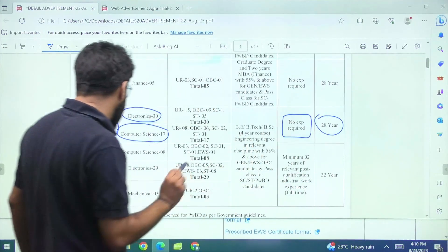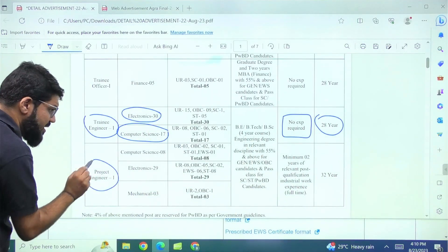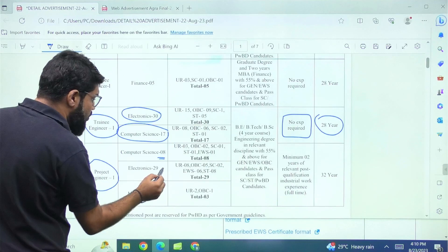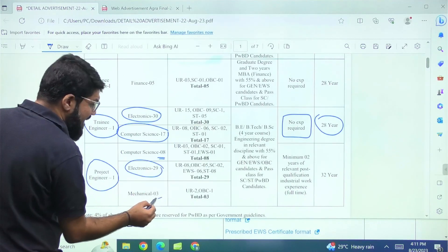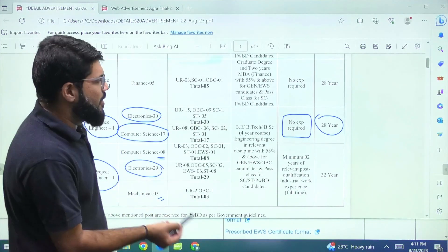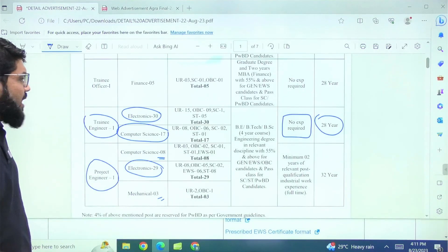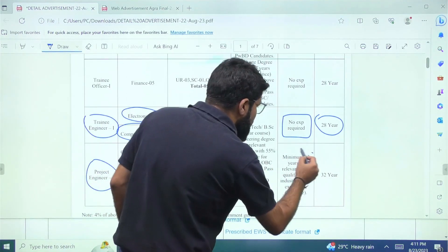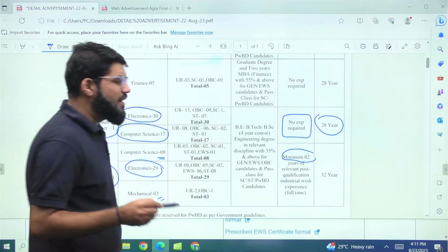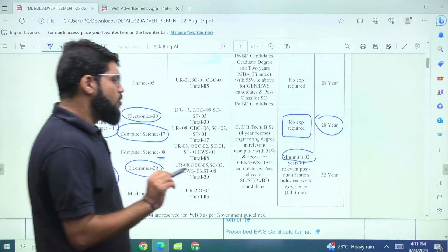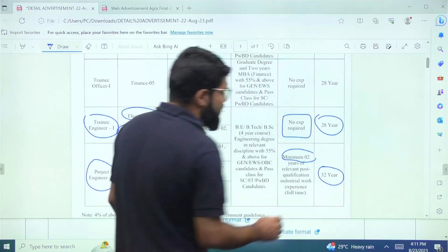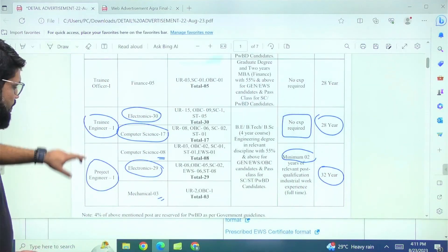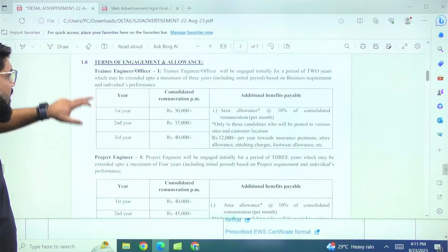I mentioned it is going to be contractual, but how long is the contract? We will talk about that. So this is a trainee engineer one post and 30 posts for electronics, 17 for computer science. So this particular has no experience required. The age limit is also mentioned 28 years and then there is a project engineer.